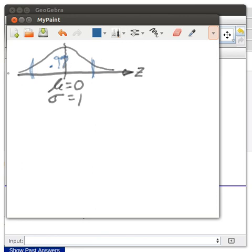That means that 1% is out in the tails. So half of 1% will be 0.005 in this tail, and 0.005 will be down in this tail.